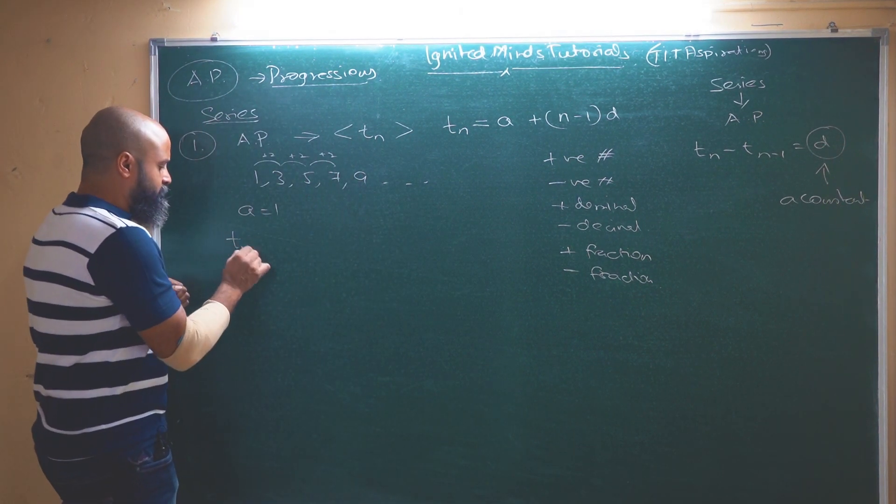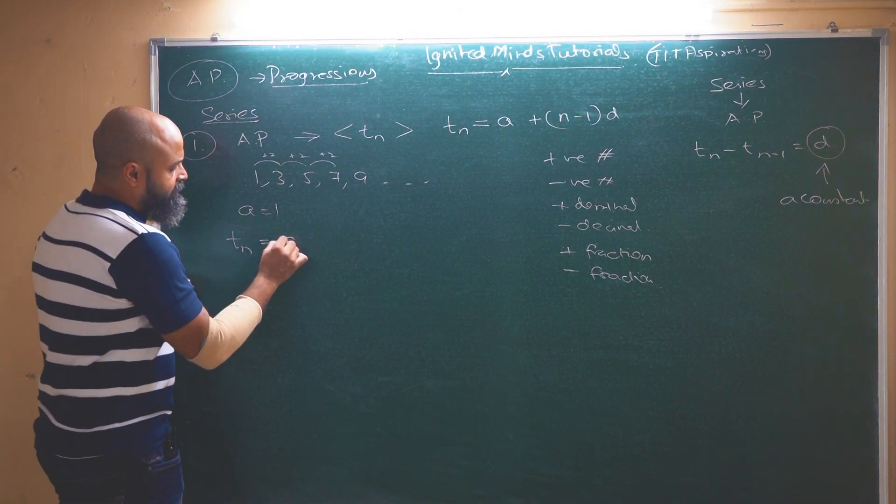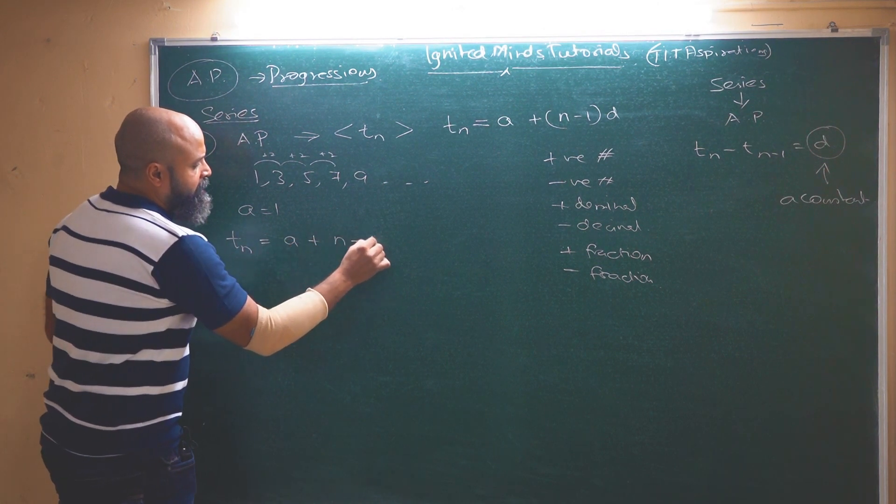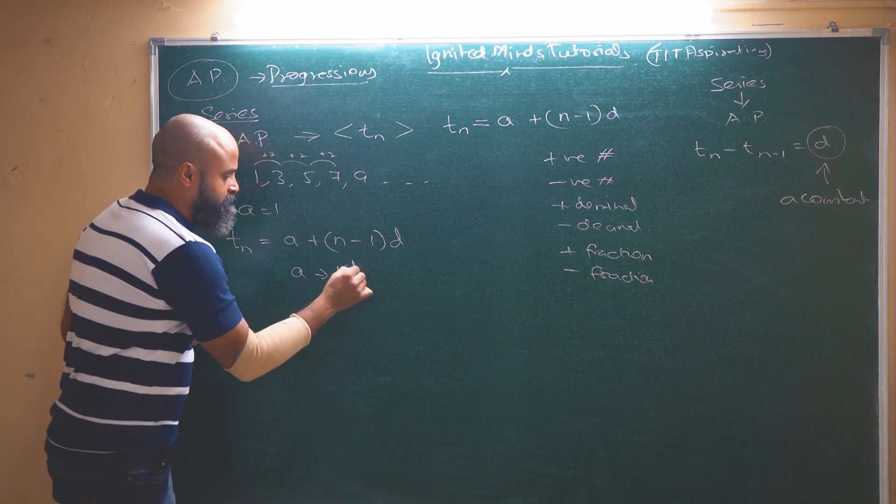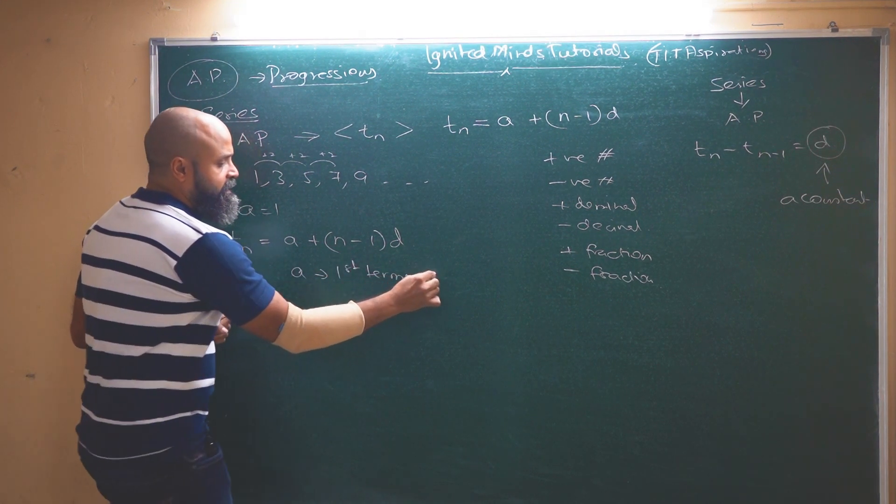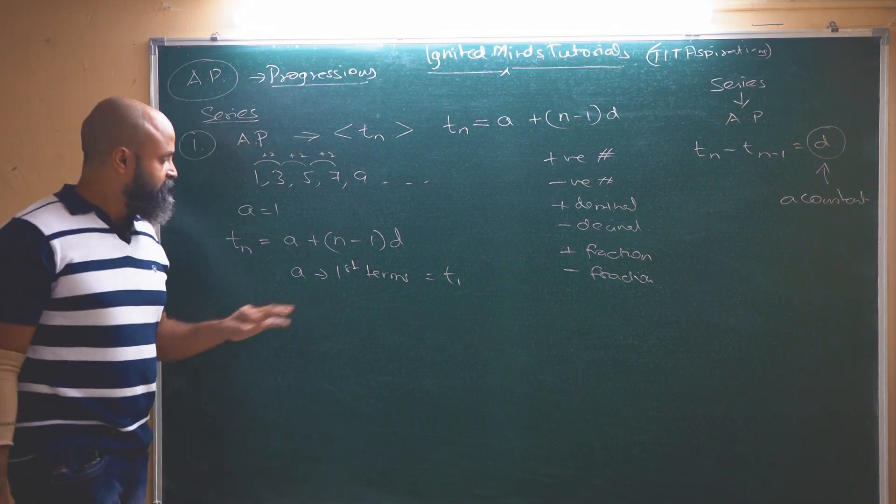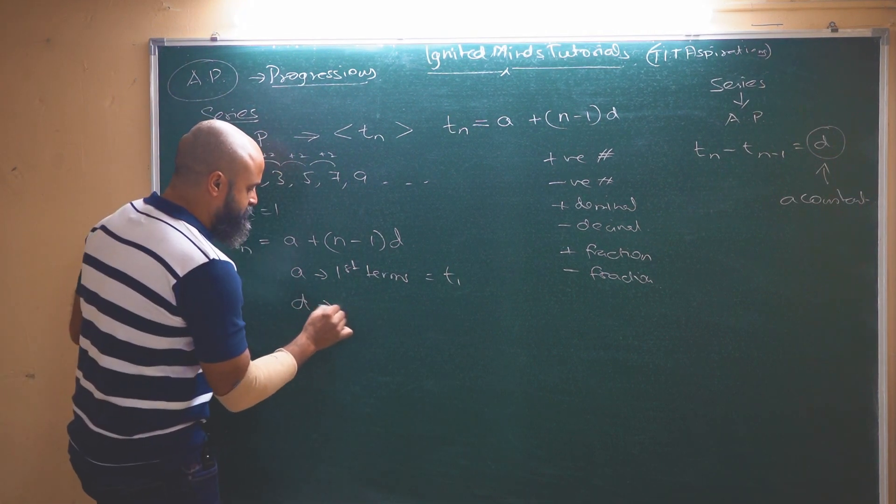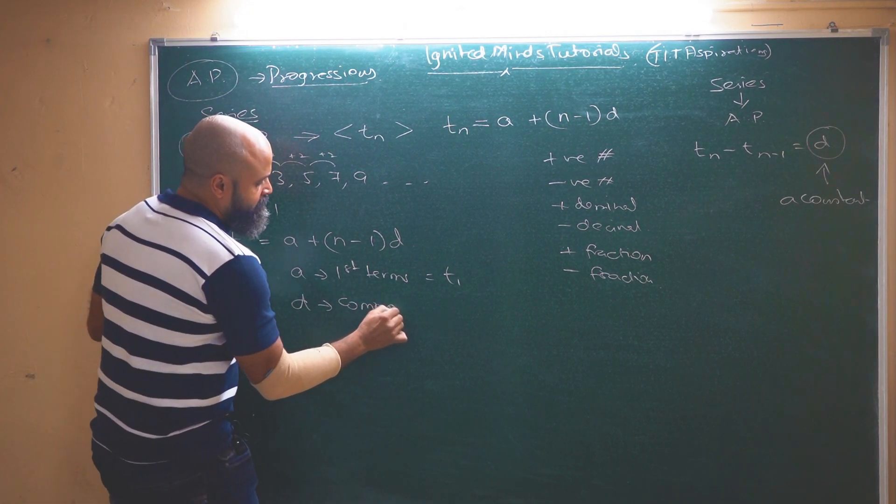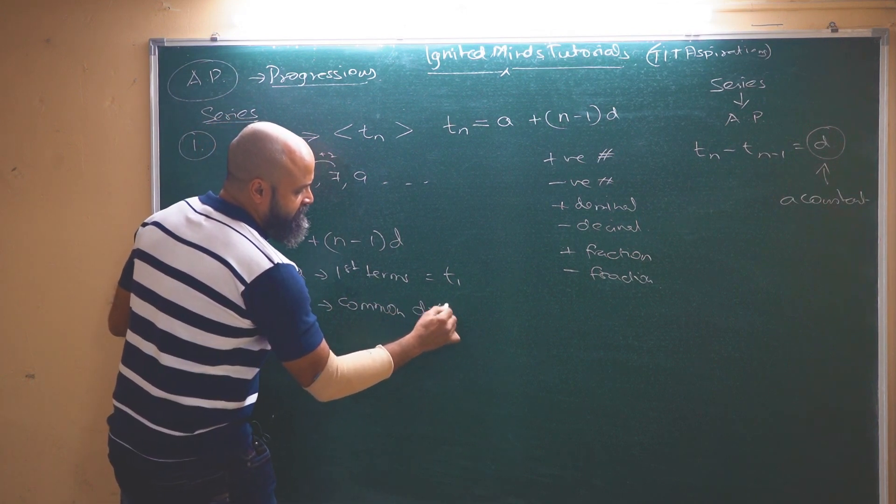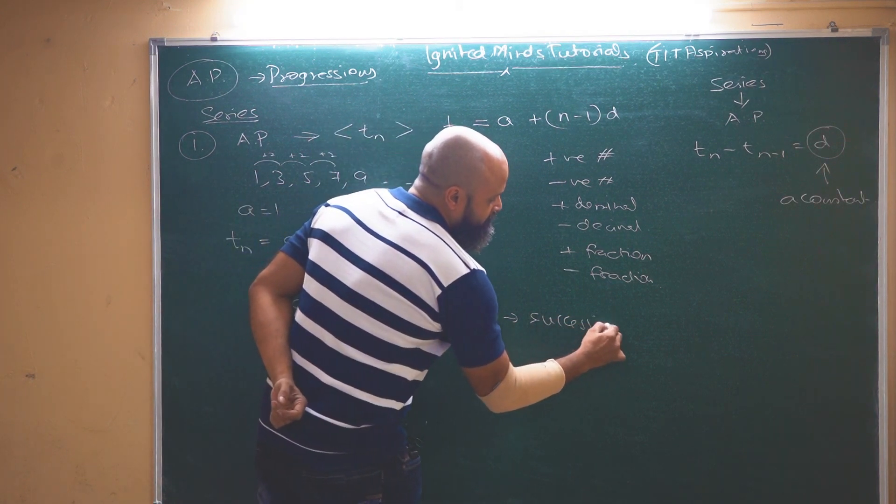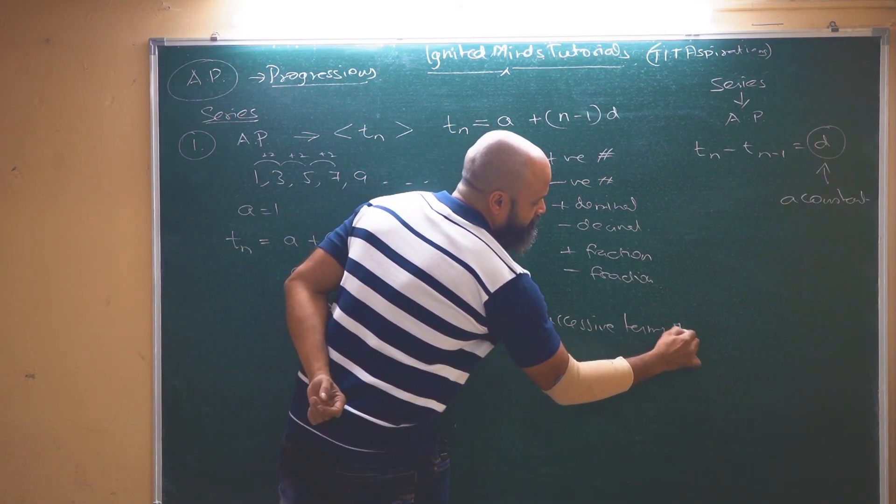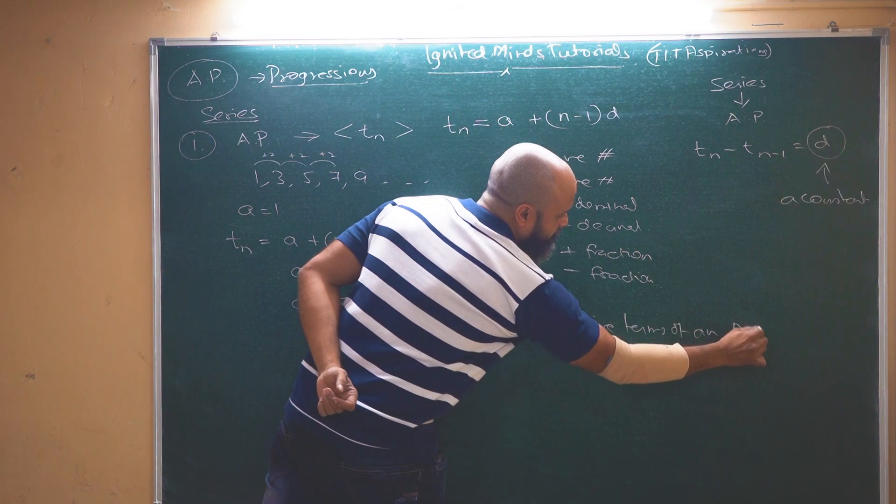So if we look at the nth term, it is given by a plus n minus 1 into d. By a we mean it is the first term. In some books it is written as t1. Then we have d which is the common difference between successive terms of an AP.